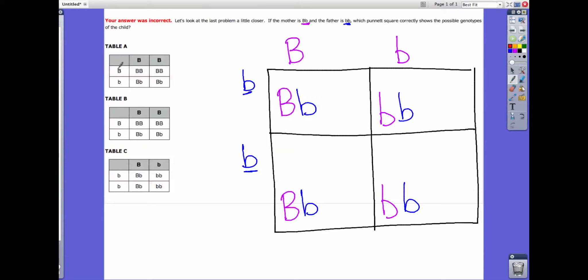So if you look at the possible answers, well that one has a big B whereas it's supposed to be a little b. That one over there has a big B when it's supposed to be a little b, and also another big B. And this one, table C, is just right, so the answer is going to be that one, number C.